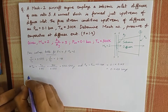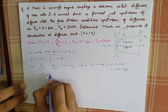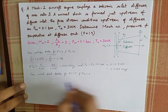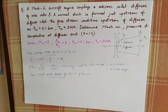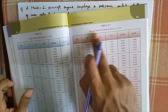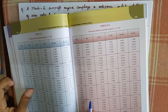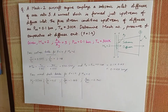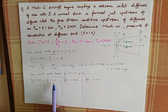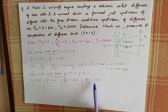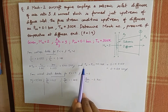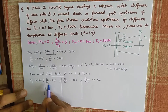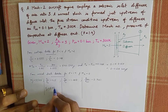From normal shock tables, for gamma equal to 1.4 and Mx equal to 2, the stagnation pressure ratio P0y by P0x is equal to 0.721. Therefore P0y is equal to P0x into 0.721, which gives 0.1 multiplied by 0.721, equal to 0.0576 bar.